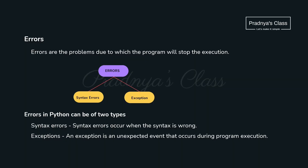First of all, let's try to understand what is an exception. Exception is nothing but an error. Errors are problems that occur when we execute a program, and the execution will stop. If we talk about the types of errors, there are two types: the first is syntax error and the second one is the exception, also called a logical error. Syntax error occurs when the syntax is wrong, but an exception occurs even when the syntax is correct — that's why we define exception as an unexpected event.